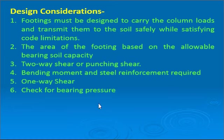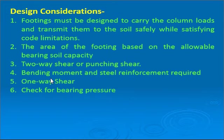The design considerations of footing are: first, the footing must be designed to carry column loads and transmit them to the soil safely within code limitations. The area of the footing based on allowable bearing soil capacity is to be calculated. Then check for two-way shear (punching shear), calculate bending moment about x-axis and y-axis, compute area of steel accordingly, check for one-way shear about both axes, and finally check for bearing pressure.